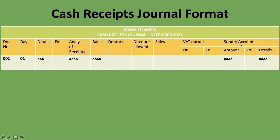The sundry account is used when there's no dedicated column for a specific transaction or account. For example, if the owner invests 10,000 rand into the business, the account is called capital — and since we have no column for capital, we take that amount to the sundry account and write 'capital' as the detail. If you do not have a column for a specific account, you take it to the sundry account.